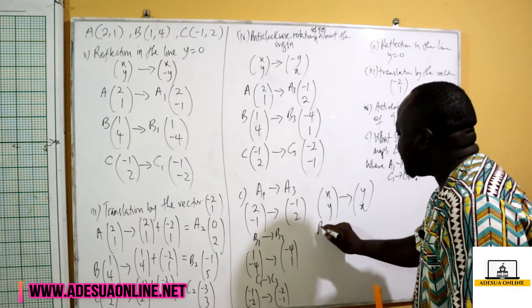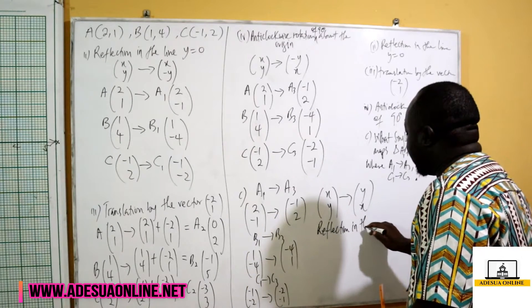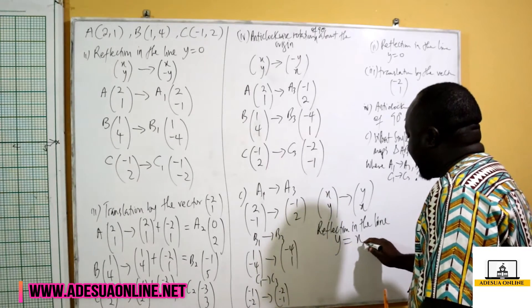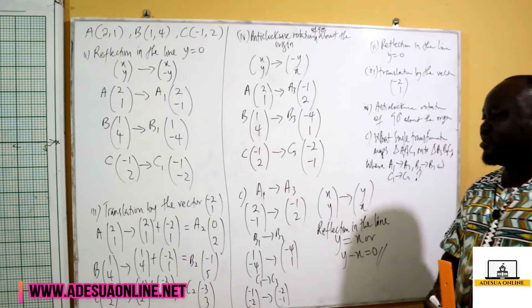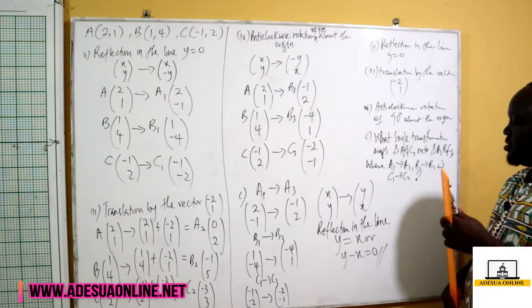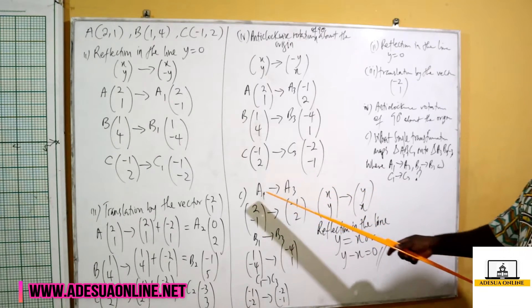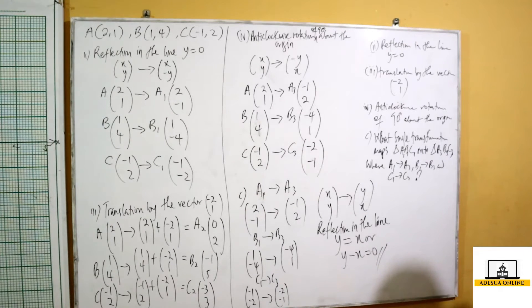Reflection in the line y is equal to x, or y minus x is equal to zero. This is the single transformation which maps (x, y) into (y, x), which is A1 towards A3. So y is equal to x, a reflection in the line y minus x equals zero.